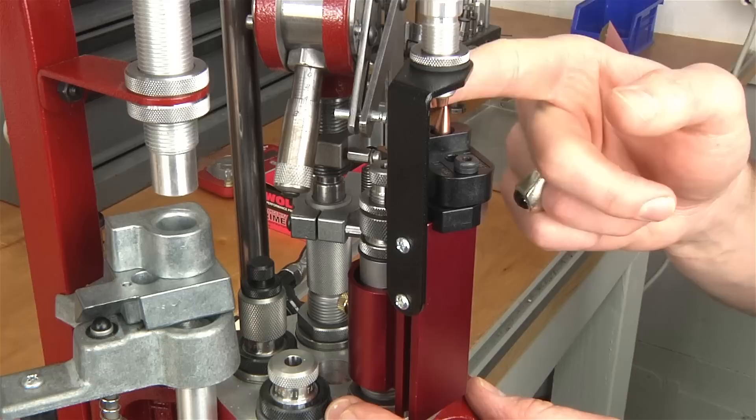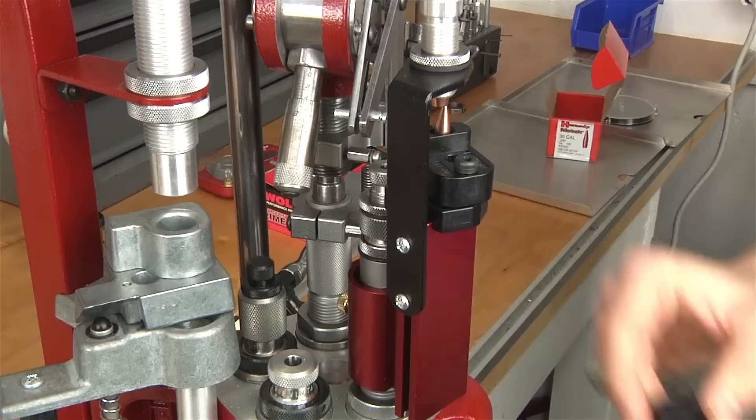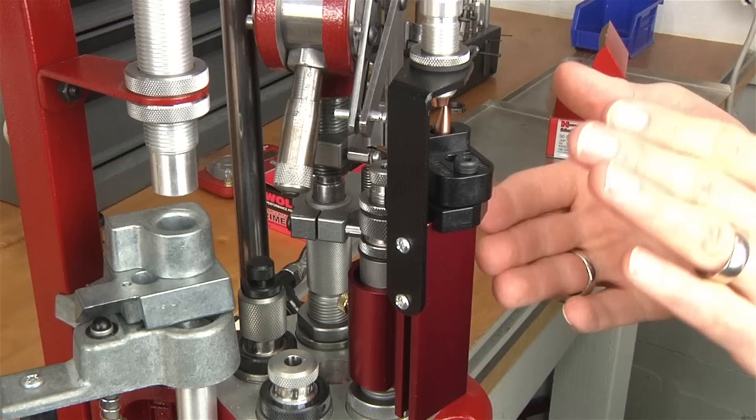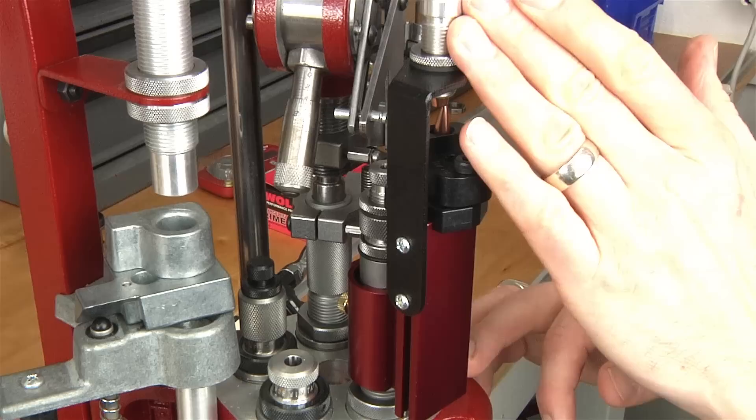There's also the bullet drop adjustment over here. There's two included pivot blocks for different bullet lengths, and then an adjustment here to fine tune the drop action. Now when you first turn on the feed bowl, it's going to fill up the drop tube.